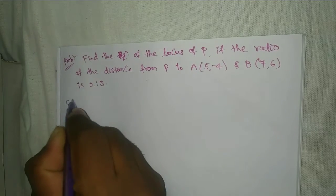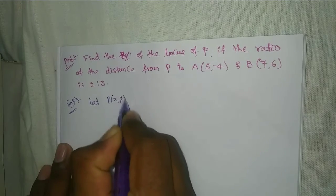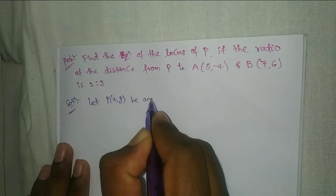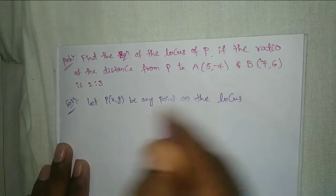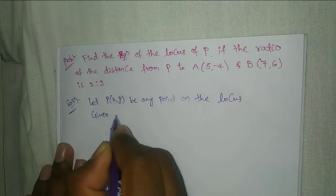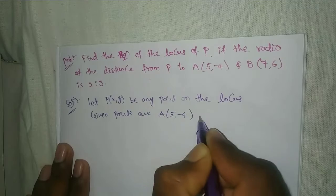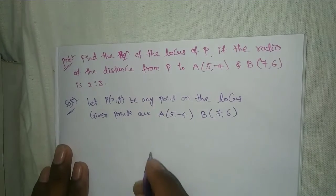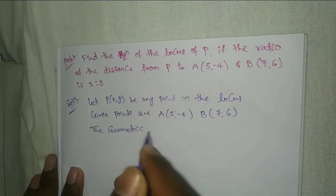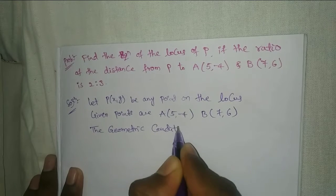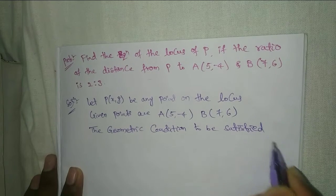Now solution. Let P(x, y) be any point on the locus. Given points are A(5, -4) and B(7, 6). The geometric condition to be satisfied by P is: